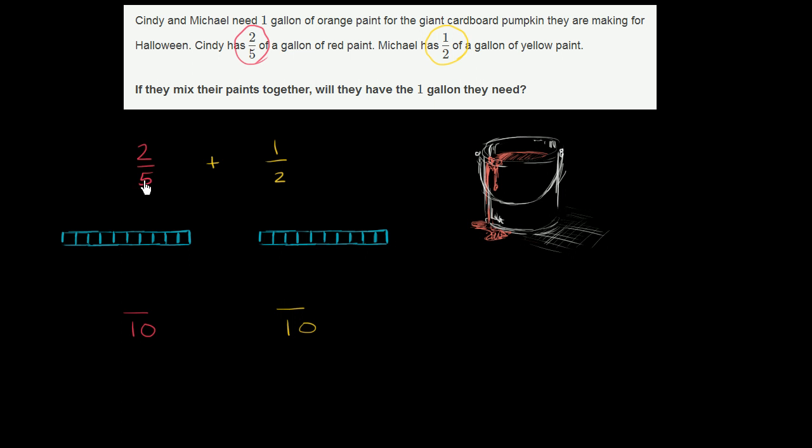So each of these are in tenths. These are 10 equal segments this bar is divided into. So let's try to visualize what two-fifths looks like on this bar. If we were to divide this bar into fifths, then we're going to have, so this is one division, 2, 3, 4.